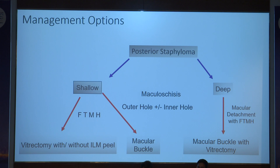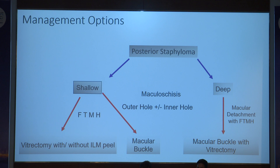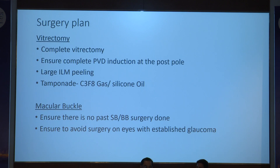As an algorithm: when you have a posterior staphyloma that is shallow, you can manage with a macular buckle in some cases. If you have a deep staphyloma with associated full-thickness macular hole, even with a shallow staphyloma, vitrectomy would be the better option. As per the surgical plan, a complete vitrectomy is generally performed, ensuring PVD is induced because there is a vitreoretinal interface issue, with multiple staining with triamcinolone to ensure entire vitreous is removed, followed by large ILM peeling.